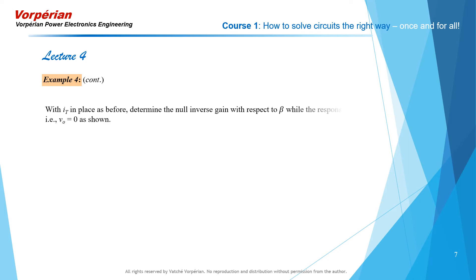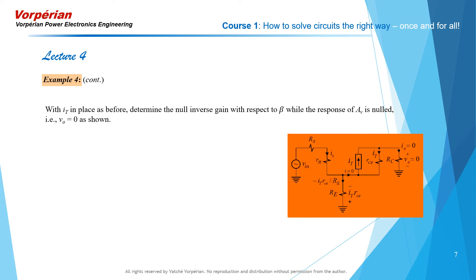The third and last calculation for the extra element theorem is the null inverse gain with respect to beta, with the response nulled. The response of our transfer function is the output voltage, so we null that output voltage. We replace the dependent current source with an independent current source pointing in the opposite direction while keeping the excitation Vin, so that together they null the output voltage. When the output voltage is nulled, the current through RC is also nulled.